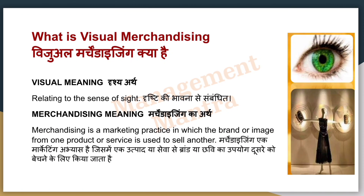First, let's see what is Visual Merchandising. Visual means related to the sense of sight — to see. Merchandising is a marketing practice in which the brand or image from one product or service is used to sell another. So merchandising is a marketing practice where we use a brand or image from one product to sell through another.